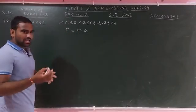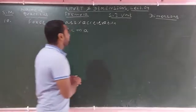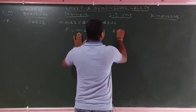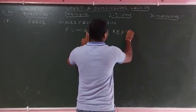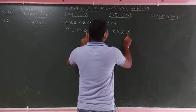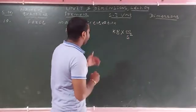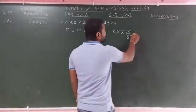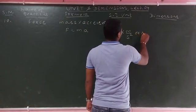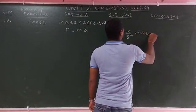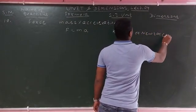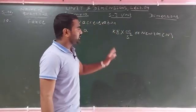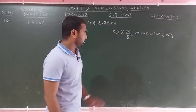The SI unit of mass is kg and the SI unit of acceleration is m/s². So the unit of force is kg·m/s², but the shortcut name is Newton. The symbol is N, named after Sir Isaac Newton. The unit is Newton.